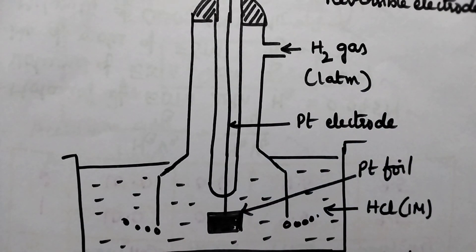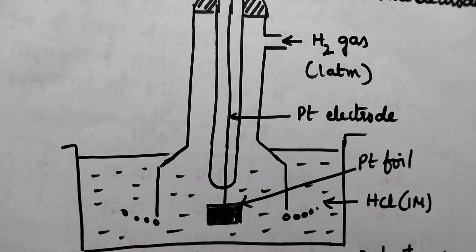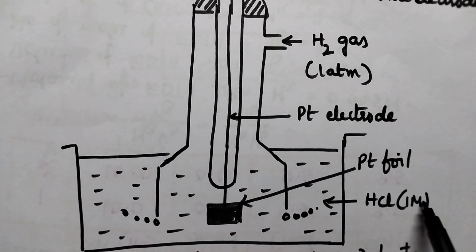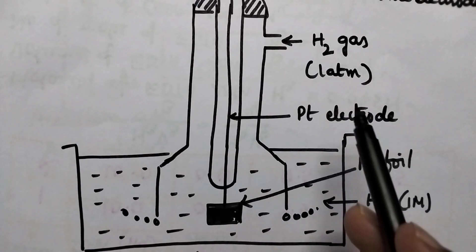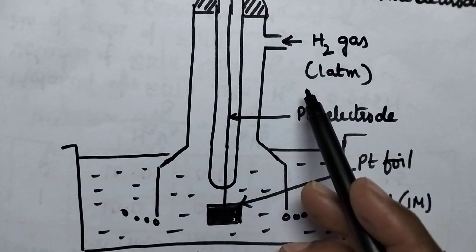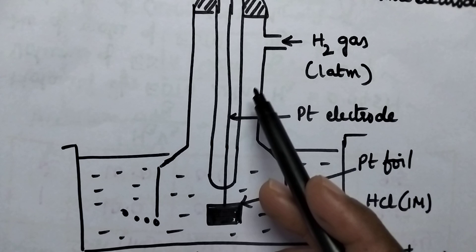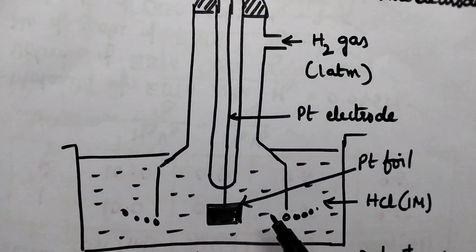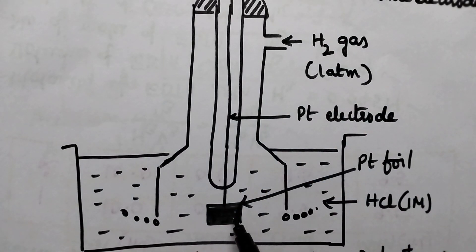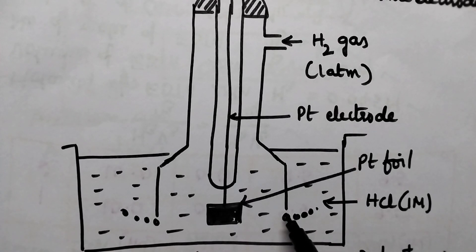This whole arrangement is placed in a large beaker containing HCl solution of 1 molar concentration. Whenever hydrogen gas at 1 atmosphere is passed through the outer glass tube, a small amount of the hydrogen gas is absorbed by the platinum foil and the remaining gas escapes from the holes provided at the base.